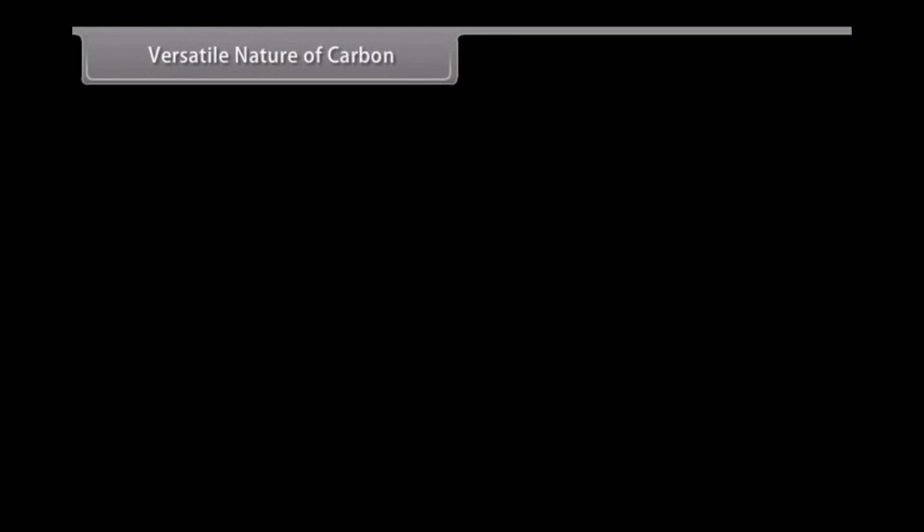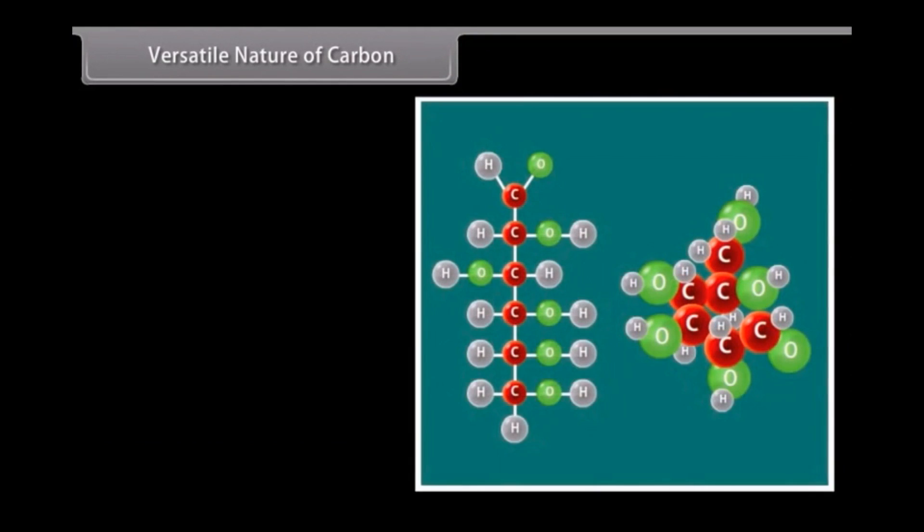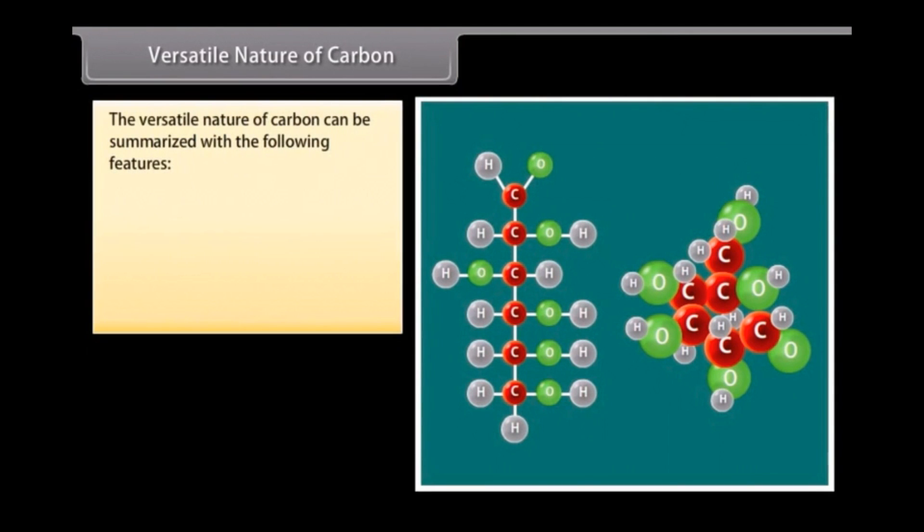Versatile nature of carbon. Organic compounds are made up of carbon, hydrogen, oxygen, and a few other elements. The unique nature of the carbon atom and the arrangement of the bonds carbon forms with other atoms enable formation of organic compounds.